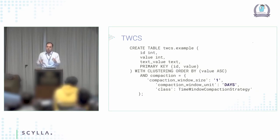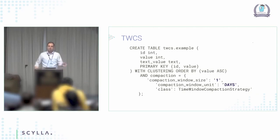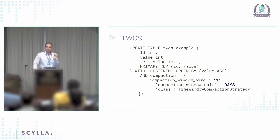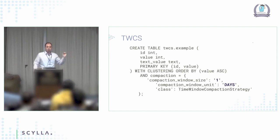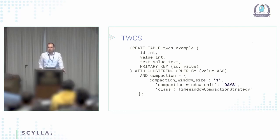When a window gets old and ceases to be the current window, I do one final major compaction which compacts everything into a single SSTable — even if I have 32 SSTables, it doesn't matter, I compact all of them into one. And then I never touch this window again. So when I said if you have one key that was not TTL'd or was inserted now but belongs to an old time window, you're never getting rid of that again, because the whole point of time window compaction strategy is not to look into that old time window.